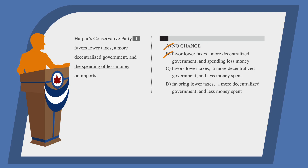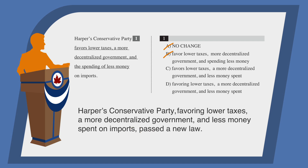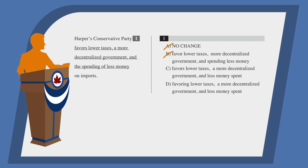Now let's take a look at answer choice D: Harper's Conservative Party favoring lower taxes, a more decentralized government, and less money spent on imports. Wait a second — that's not a full sentence, it's just a fragment. In this form, "favoring" becomes a modifier. If we wanted to use "favoring," we would need to add a comma after "party," a comma after "imports," then a verb and some other words to make it a full sentence. For example: Harper's Conservative Party, favoring lower taxes, a more decentralized government, and less money spent on imports, passed a new law. That would be acceptable, but that's not an option. So answer choice D is wrong.